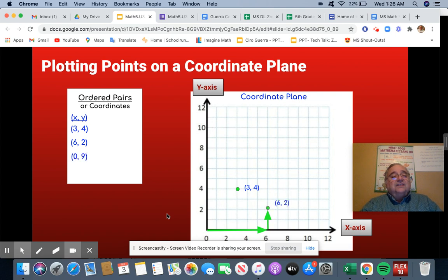The next one is 0, 9. We start at the origin. What do I do next? Excellent. Since we're at 0 x, we have to go up 9, so we'll go up the y-axis to 9. We make the point (0, 9), and we label it.